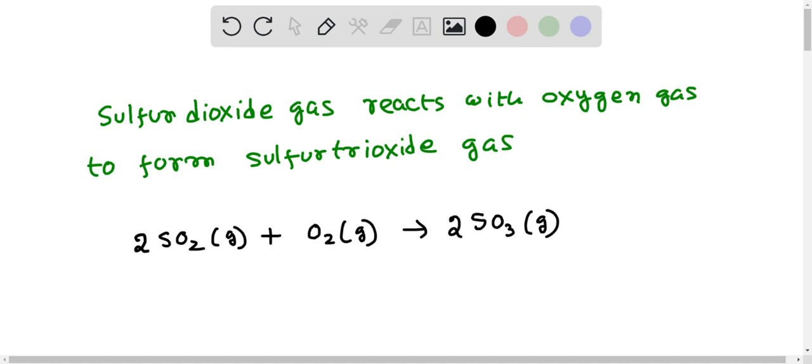Now we have two sulfur atoms on both sides of the equation. We have two times two, four oxygen atoms plus these two, six oxygen atoms on the reactant side and two times three, six oxygen atoms on the product side. So all the atoms are balanced.